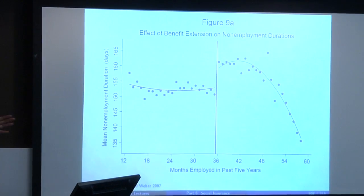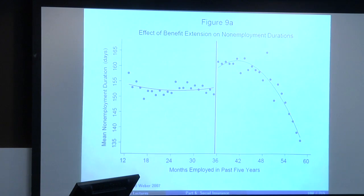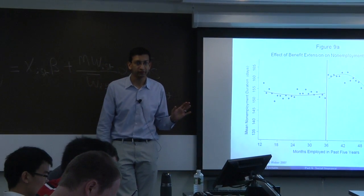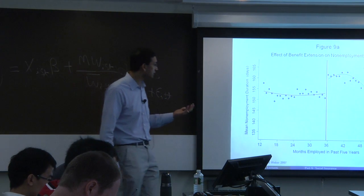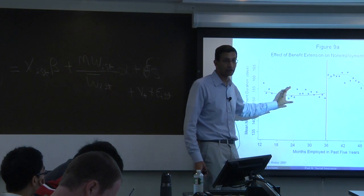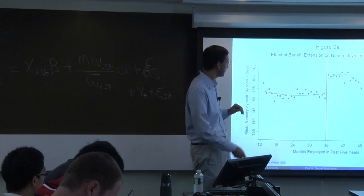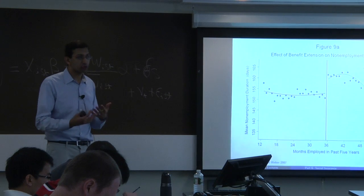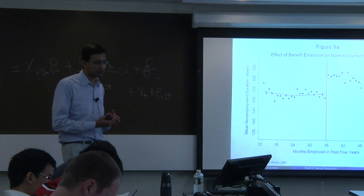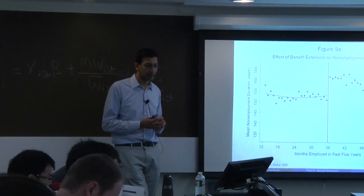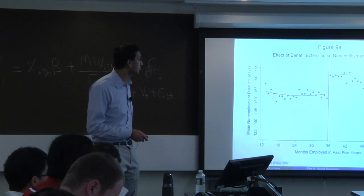RD is one of the most popular estimators today because people find it more compelling than difference-in-differences or other strategies. The fundamental reason is that you can see various contrasts very clearly visually—you see patterns that are quite stable and then jump discontinuously at the cutoff. You should make sure to know standard methodological practice; there's a good paper by David Lee and Tom Lemieux in the JEL that reviews these issues.